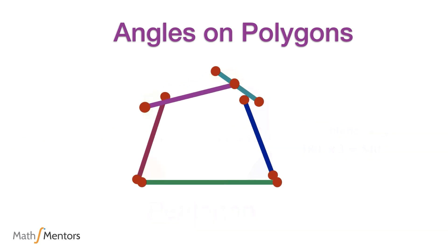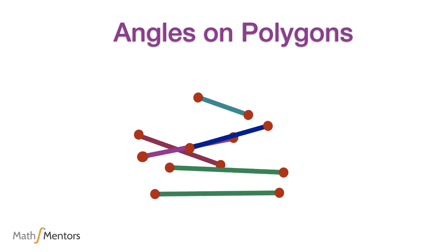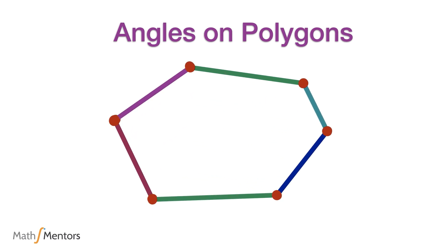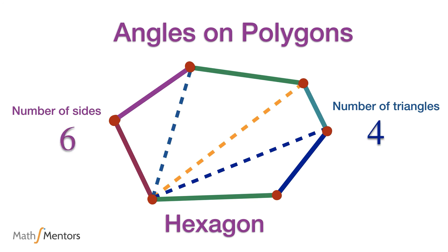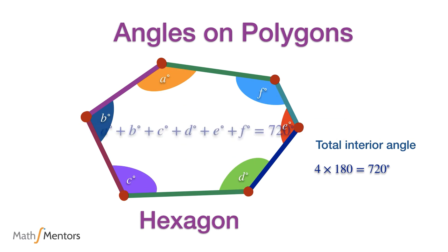Now suppose you are given six lines to make a polygon — the polygon you could make is a hexagon. Hexagons are polygons made out of six straight lines. This shape can be divided into four triangles. Therefore the interior angles on a hexagon add up to 720 degrees.